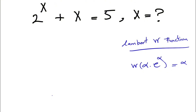That's basically the Lambert W function. Let's see how we can use it to solve this question, which doesn't seem very easy. One way would be to graph 2 to the x and see where it crosses 5 minus x to figure out how many answers we have, but finding the exact value is not something we can guess, which means we need to go through this process.